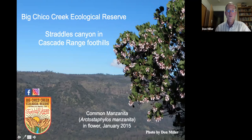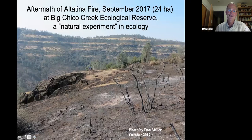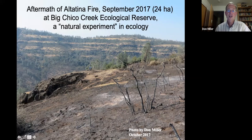Here's one of the two manzanita species I've studied: Arctostaphylus manzanita, blooming right now in January. Fires happen, and this particular fire at the reserve — the Altatina Fire, about 24 hectares — I regard as a natural experiment. The environment was changed not by manipulation but by accident, and now ecological succession can proceed and we can study it. This is the aftermath: the soil is mineralized and the shrubs are charred sticks.